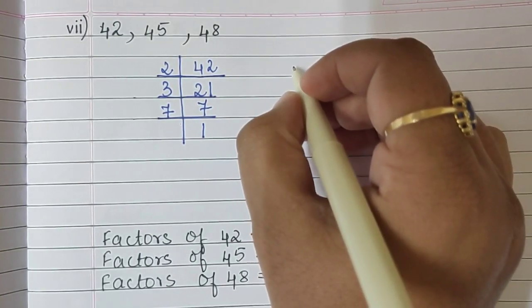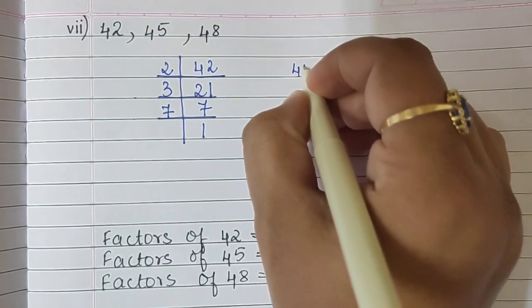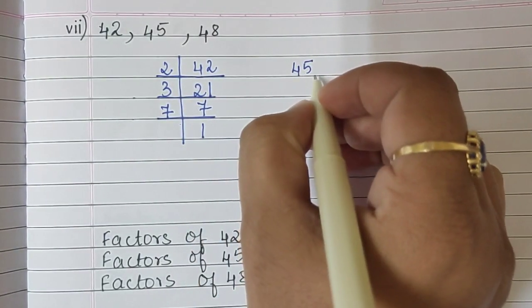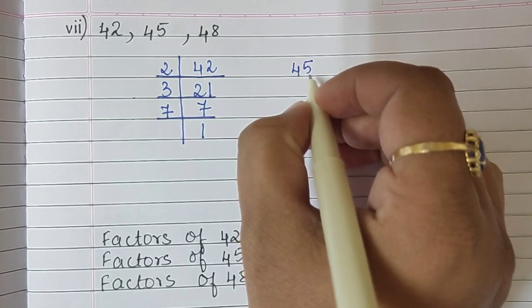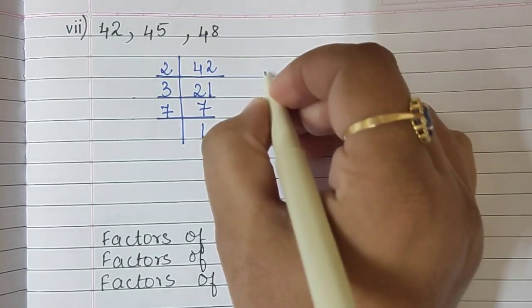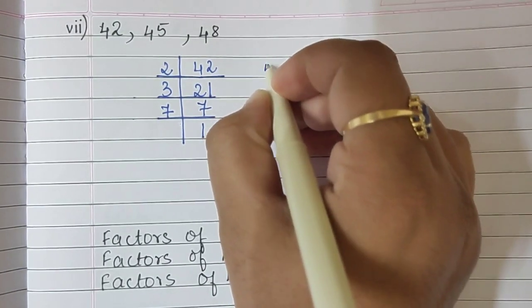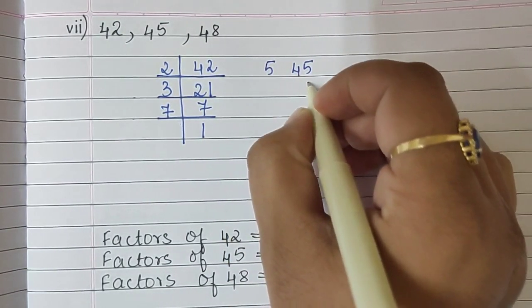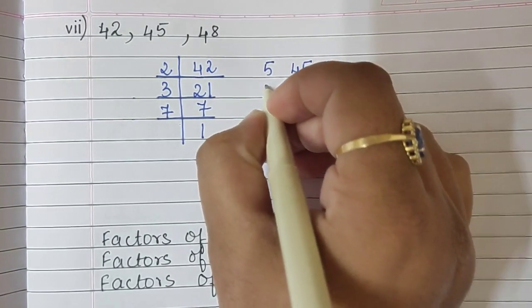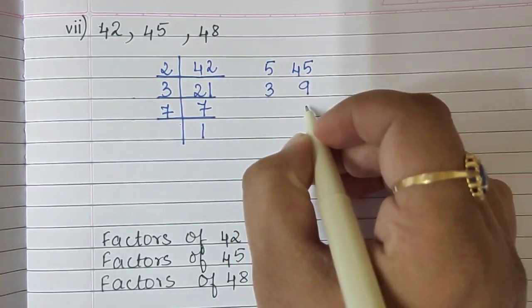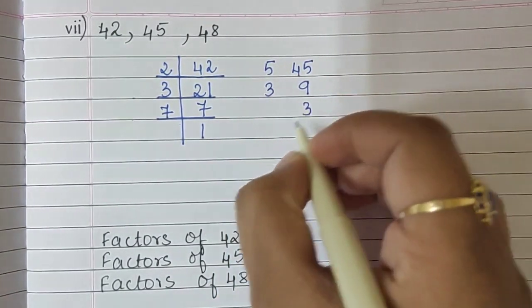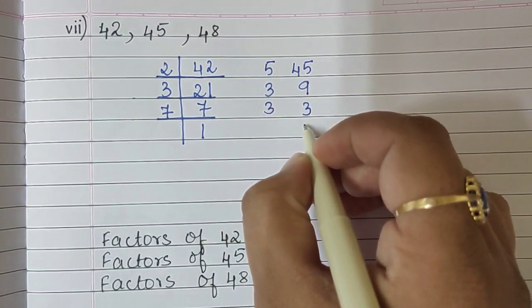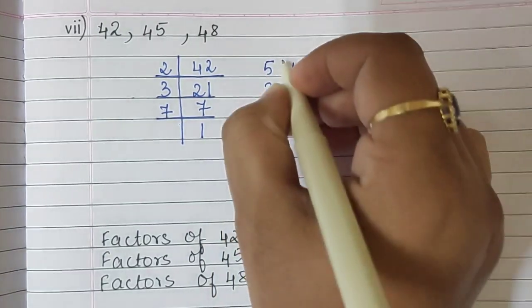The next number is 45. 45 is divisible by 5, so we begin with 5. 5 nines are 45. Then 3 threes are 9, and 3 ones are 3.